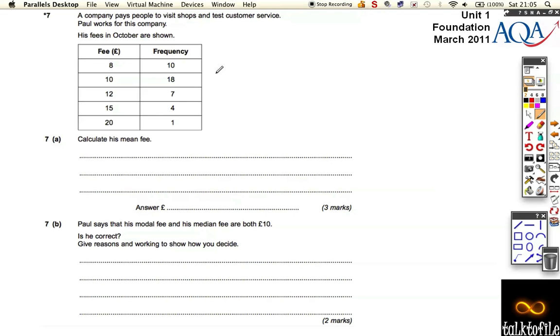Calculate his mean fee. Well, when you've got the data in a table like this, you can call this your x column, this is your frequency column, and then we need an x times f column over here. So let's add that extra column in and an extra line on the bottom as well.